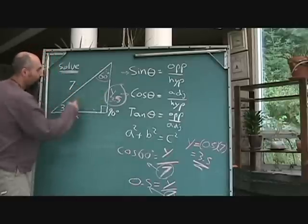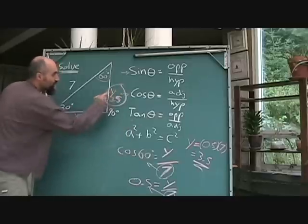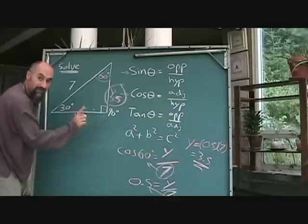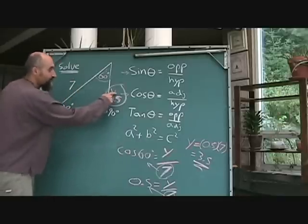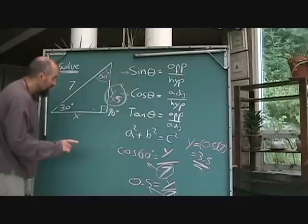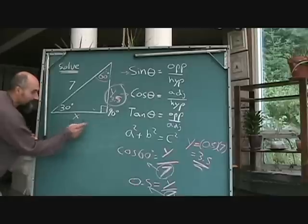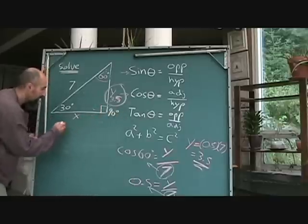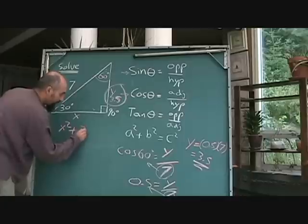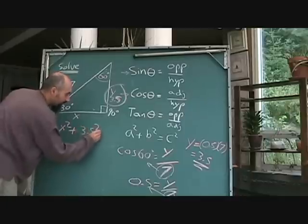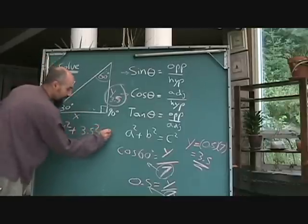So the way this works is, over here, a and b always refer to the two sides that aren't the hypotenuse. So you can call this one a or this one a. It doesn't make a difference. So let's just go with the x being a. So it's going to be a squared plus b squared equals c squared. So it's going to be x squared plus 3.5 squared is equal to 7 squared.